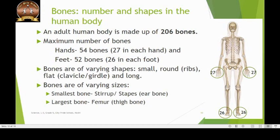Bones of the human skeleton are of varying sizes and shapes. The bones of the arms and legs are long and rod-like structures. The bones in the wrist and the ankles are small, and the bones of the pelvic girdles and the shoulder girdles are flat. The backbone is made up of many irregularly shaped ring-like structures called vertebrae, and the skull is made up of flat bones which are fused together to form a round structure.